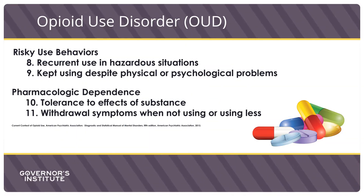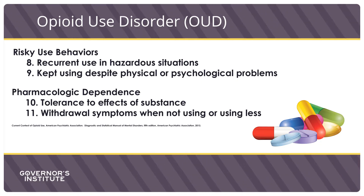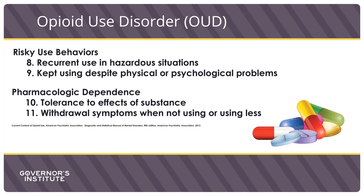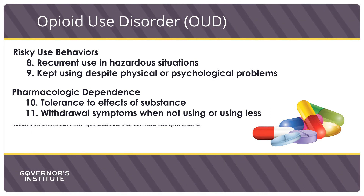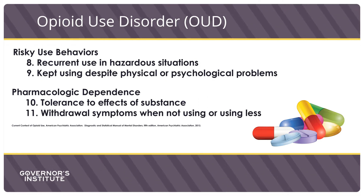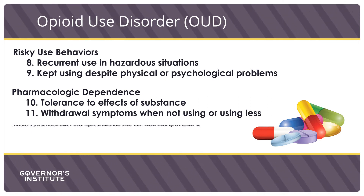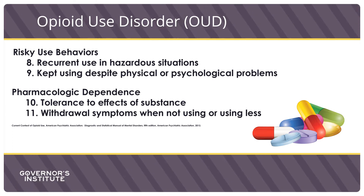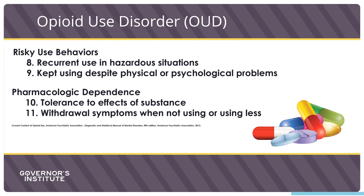The first four criteria describe impaired control over use, and the next three criteria describe social impairment caused by opioids. The last two categories include recurrent use despite risk, and then dependence. Pharmacologic dependence is a physiologic response to opioids, so tolerance and withdrawal are expected with regular use of opioids, even in the absence of addiction. Patients prescribed opioids for pain or for medication-assisted treatment who have only tolerance and withdrawal without any other criteria are not addicted. Dependence does not equal addiction.